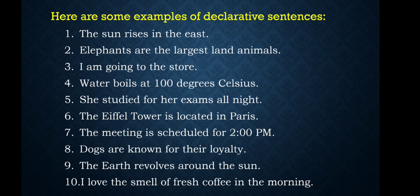Here are some examples of declarative sentences: 1. The sun rises in the east. 2. Elephants are the largest land animals. 3. I am going to the store. 4. Water boils at 100 degrees Celsius. 5. She studied for her exams all night. 6. The Eiffel Tower is located in Paris. 7. The meeting is scheduled for 2 pm.